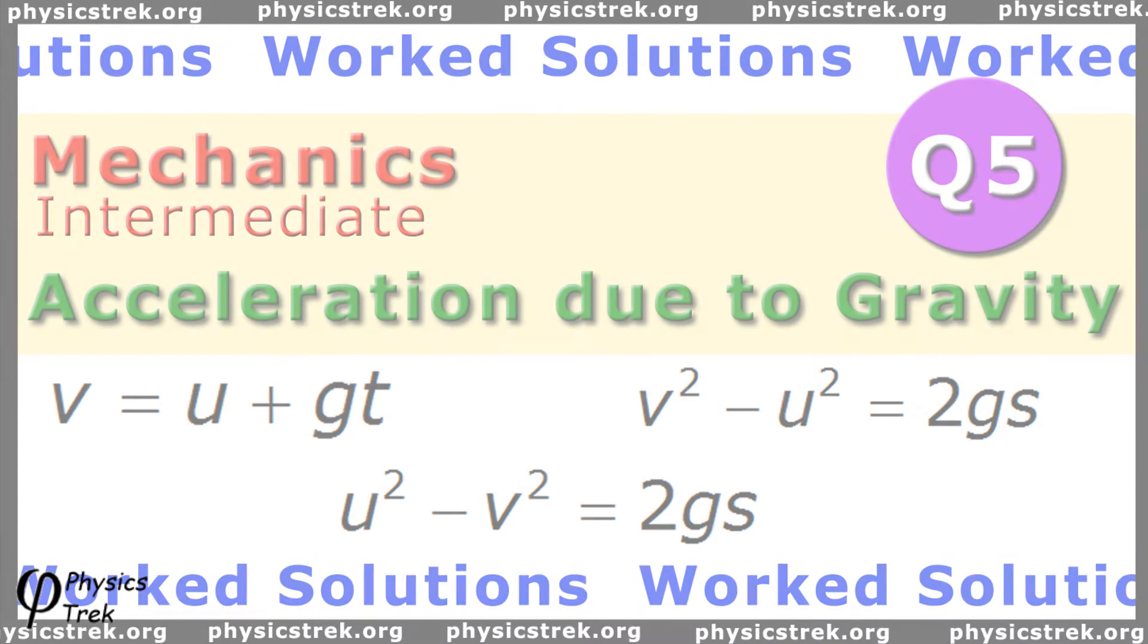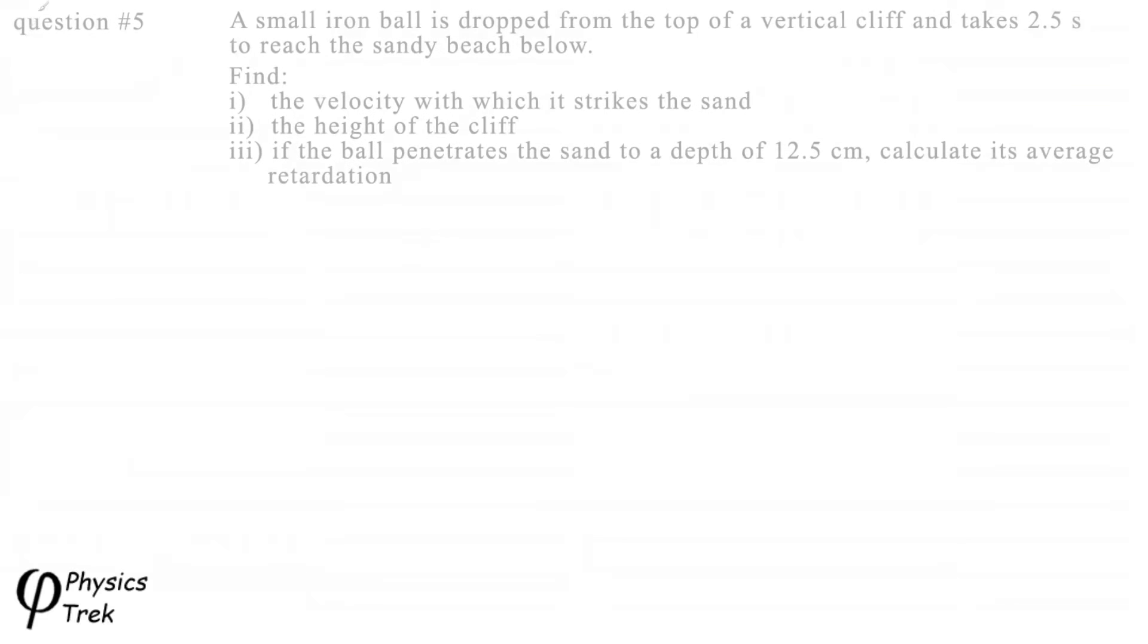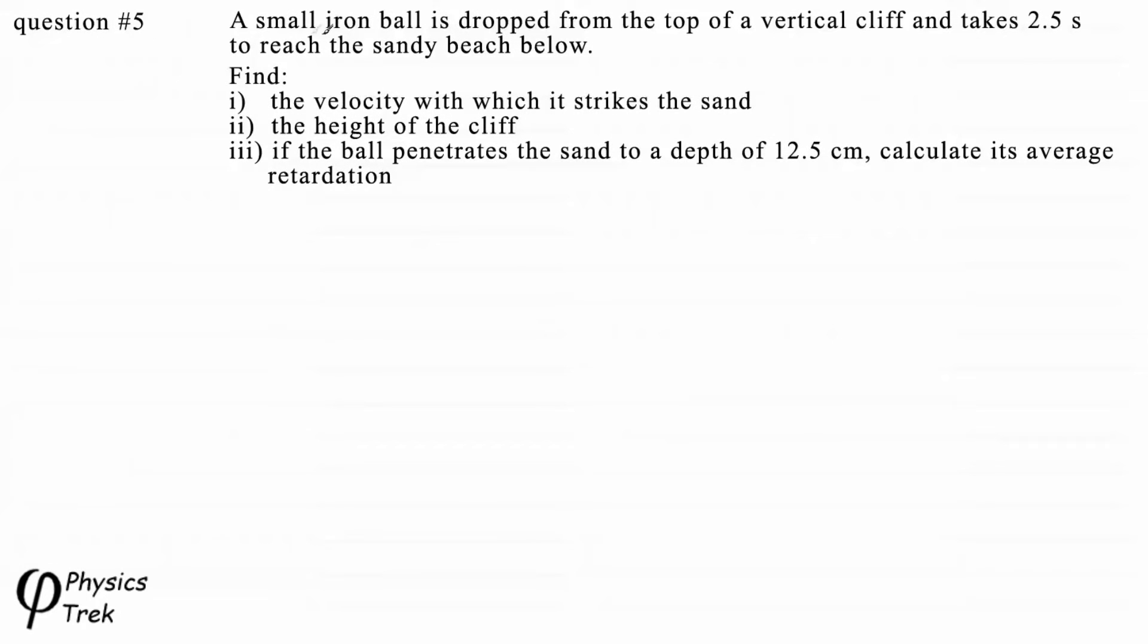Here it is. Question number five. A small iron ball is dropped from the top of a vertical cliff and takes 2.5 seconds to reach the sandy beach below. Find one the velocity with which it strikes the sand two the height of the cliff and three if the ball penetrates the sand to a depth of 12.5 centimeters calculate its average retardation.